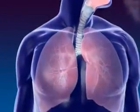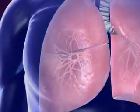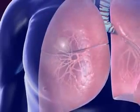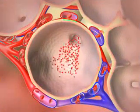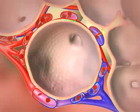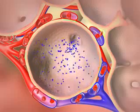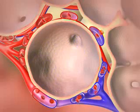From the nose to the pharynx, larynx, trachea, bronchus, and alveoli, by the process of diffusion, oxygen in the air moves from the alveoli to the capillaries. Carbon dioxide moves from the capillaries to the alveoli and is exhaled. This process is called respiration.